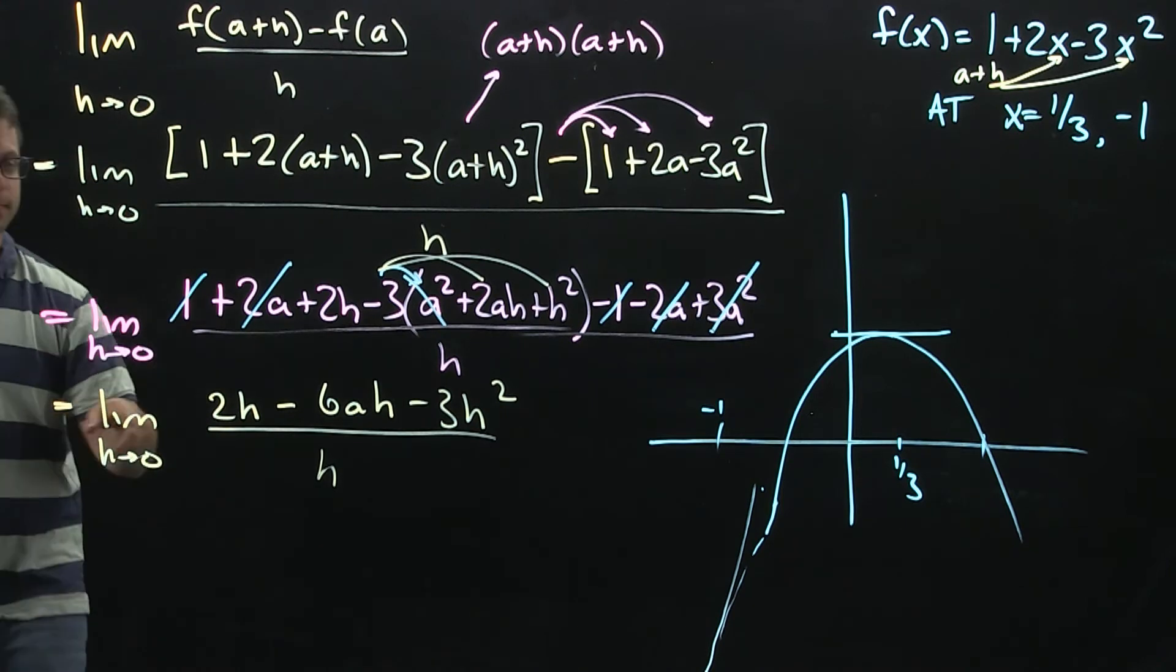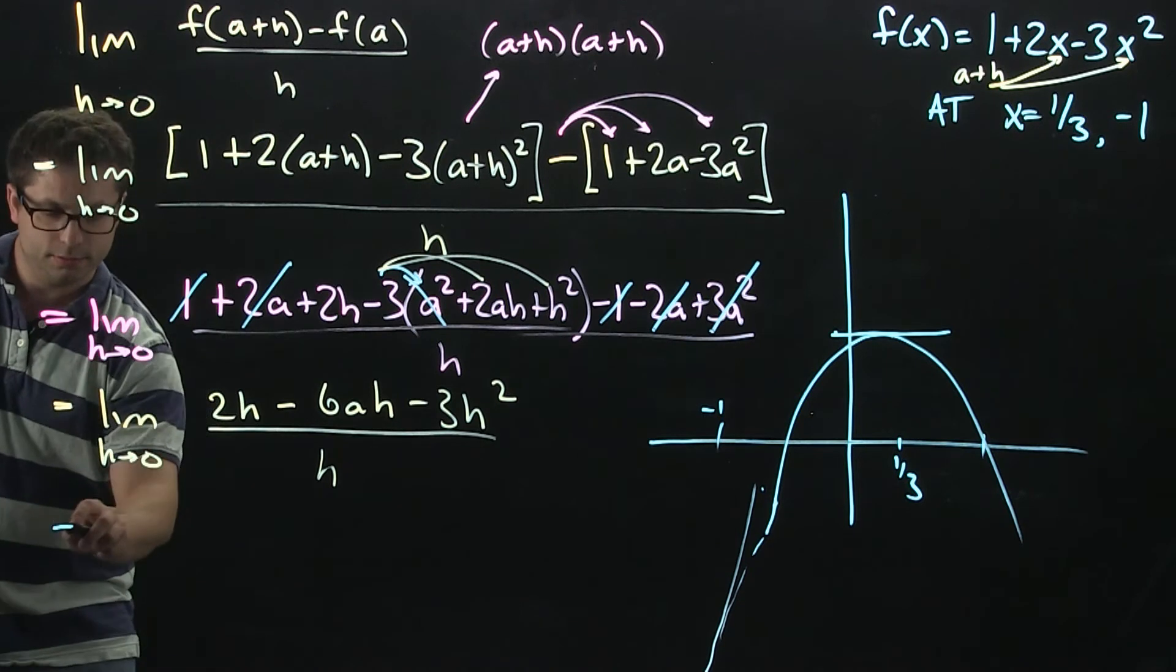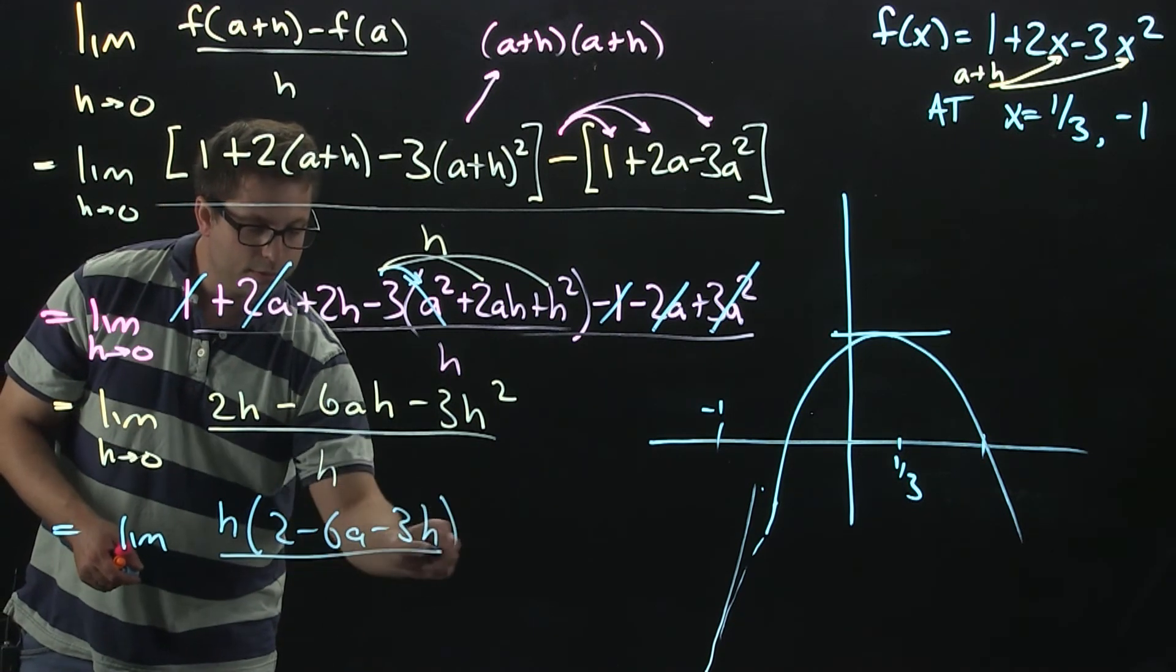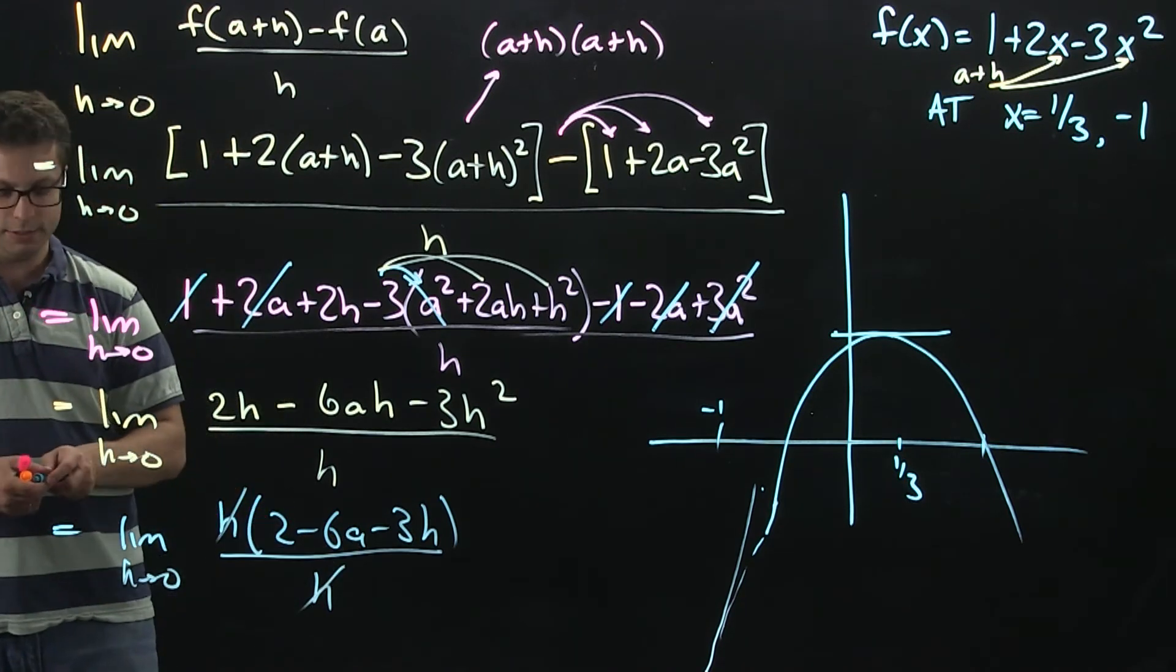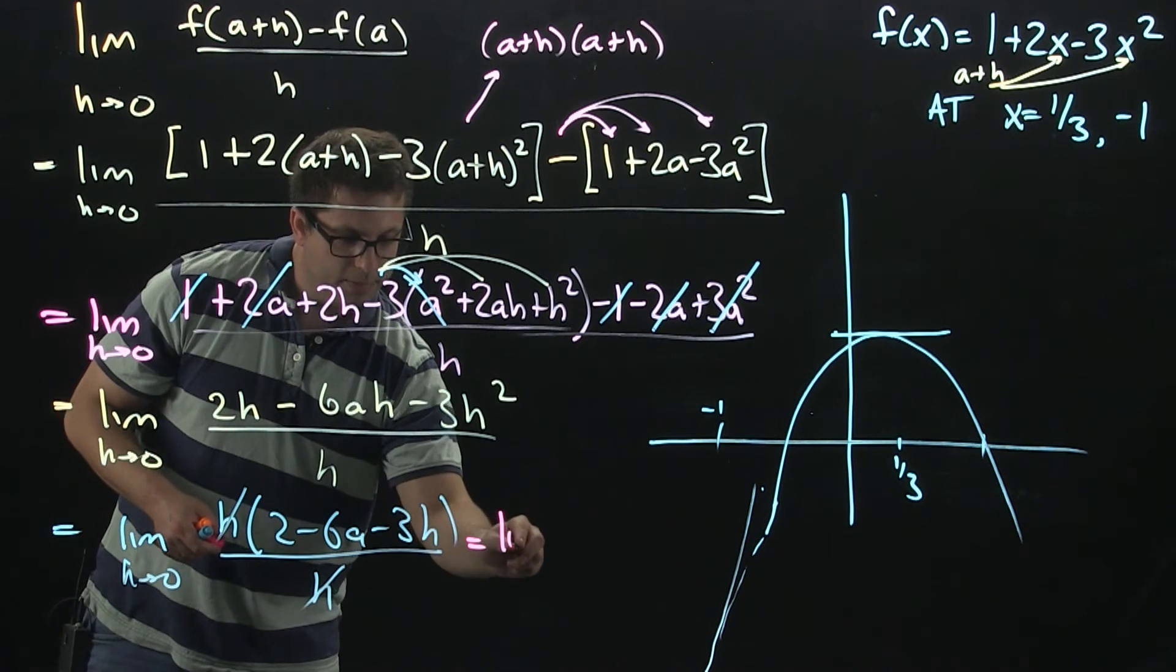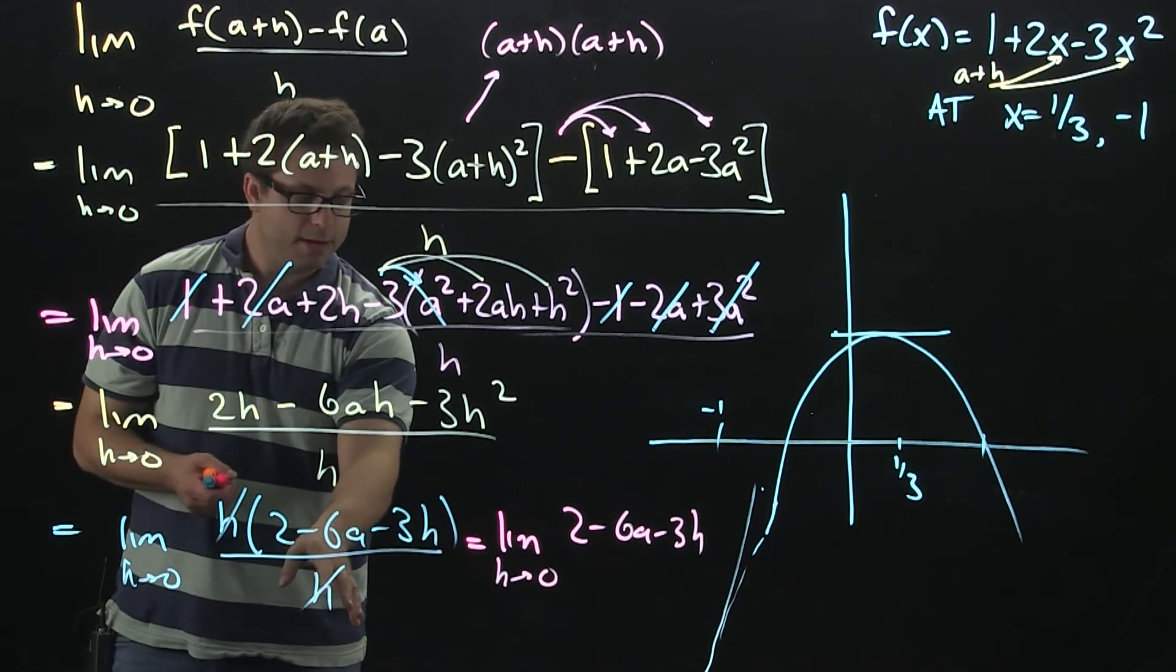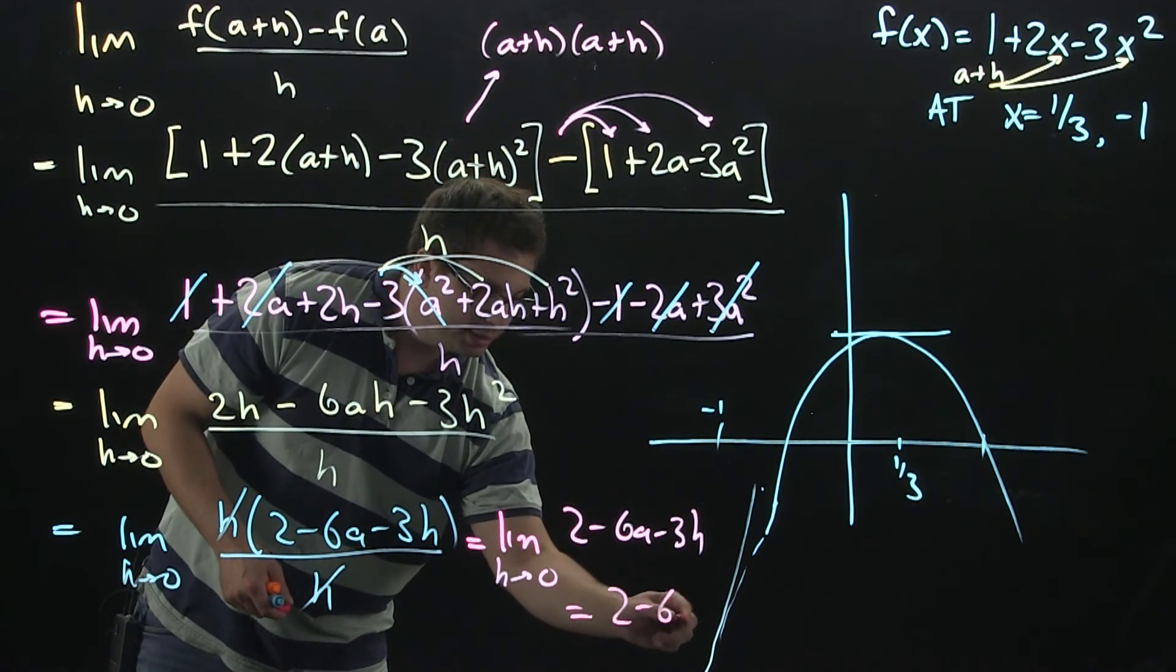Now, you can see that every term on the numerator has an h in it, so I'm going to factor that h out. Then, you can see the h's cancel and you are left with the limit of 2 minus 6a minus 3h. Now that I can let h be zero because I'm not going to divide by zero anymore. My final is going to give me 2 minus 6a.